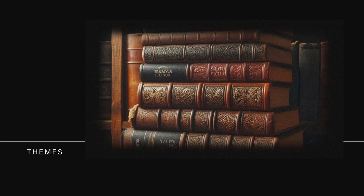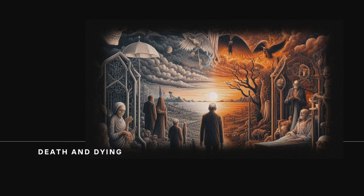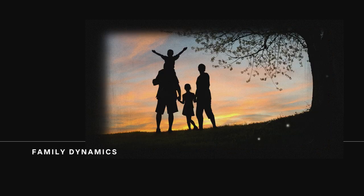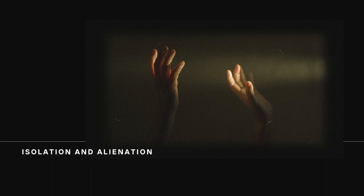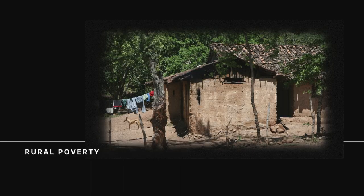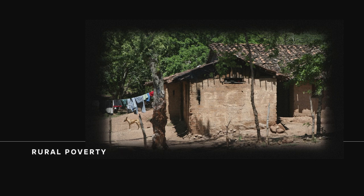The novel delves into several profound themes. Death and dying: through Addie's death and the family's journey, we explore different attitudes towards mortality. Family dynamics: the Bundren family's complex relationships are laid bare as they struggle with their individual burdens. Isolation and alienation: many characters feel isolated from each other and their community. Rural poverty: the Bundren's journey underscores the harsh realities of life for poor Southerners in the early 20th century.